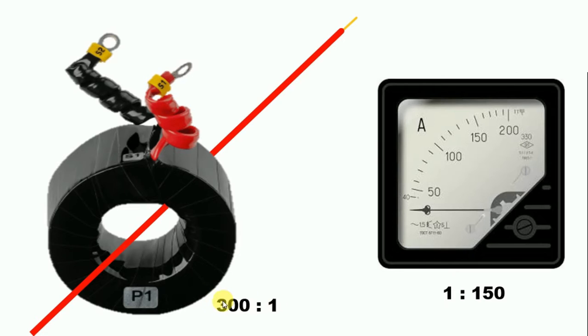Here the ratio of CT is written as 300 by 1. It means in this wire, 300 ampere current will flow. Then in the two output wires, S1 and S2, 1 ampere current will flow.